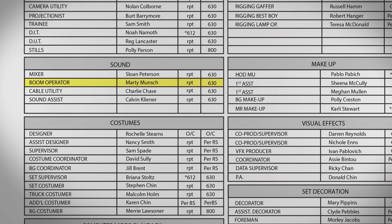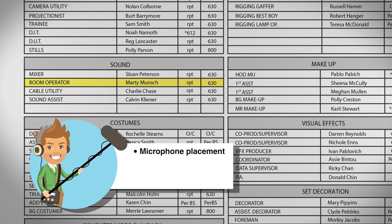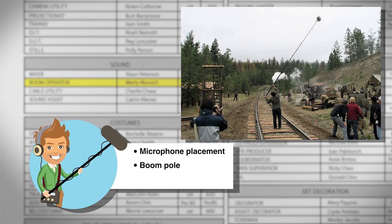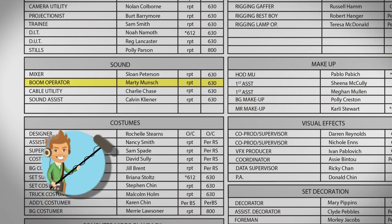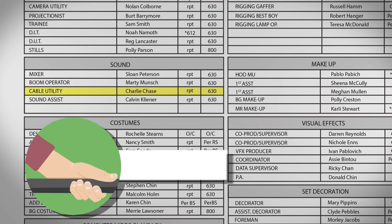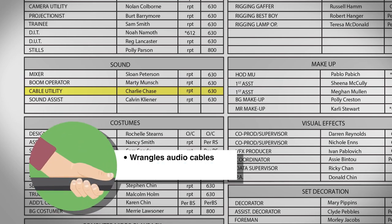The boom operator, or boom op, is in charge of microphones and their placement. Boom operators often utilize a boom pole with a microphone on the end. A wind sock is placed over the microphone to deaden sounds like the wind blowing or an actor breathing. They are also in charge of placing wireless microphones that attach to clothing, called lavaliers or body mics. A cable utility or cable puller is in charge of wrangling the microphone cable so that it's out of the way during moving shots. A utility sound technician or sound maintenance person supports the sound department by setting up and maintaining audio hardware and resolving any audio problems.